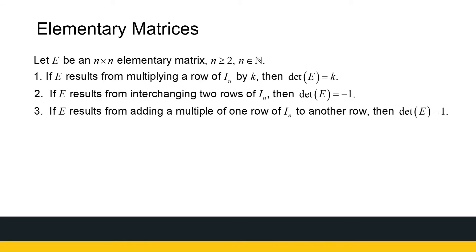Looking at determinants of elementary matrices: if I've got an elementary matrix found by multiplying a row of I_n by k, then the determinant of that elementary matrix is just k. Remember, the determinant of I_n is 1, so if I multiply a row by k, the determinant of E equals k. If E results from interchanging two rows of I_n, then the determinant of E is minus 1. And if E results from adding a multiple of one row to another, the determinant does not change.